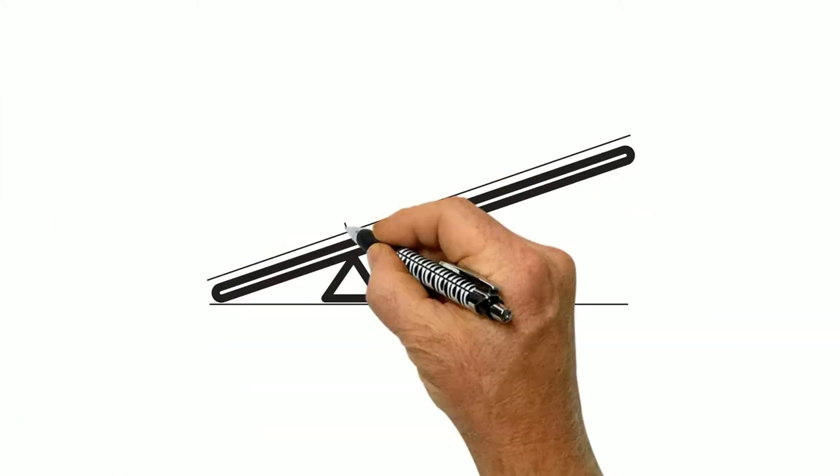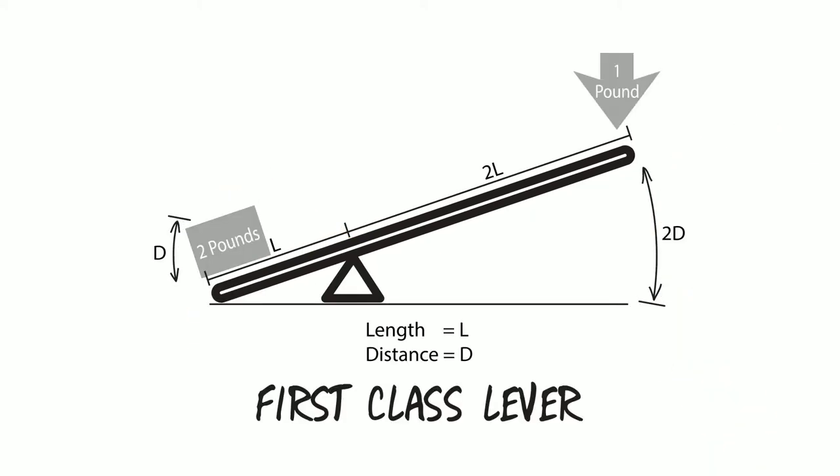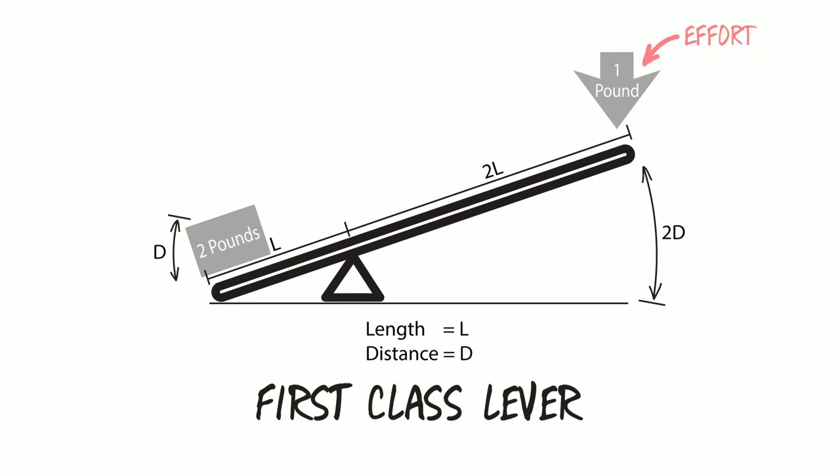The trick behind each simple machine is that they all generate a mechanical advantage, allowing us to move, lift, or secure an object a little bit at a time, rather than all at once. And since we're doing it a little at a time, the effort we put into the machine is less than if we tried to move the load directly.